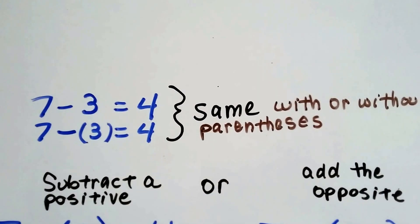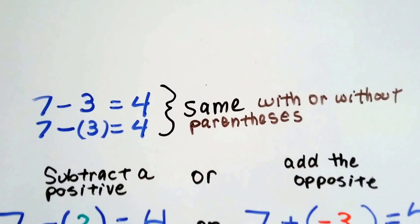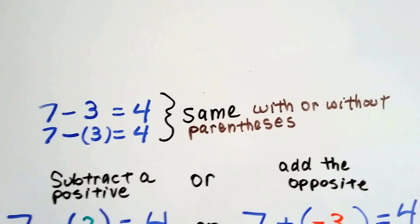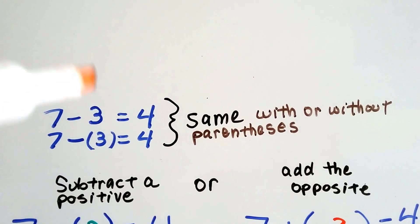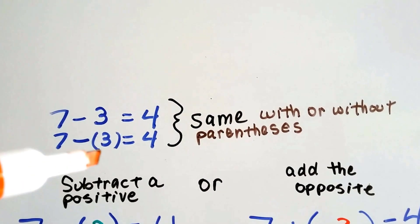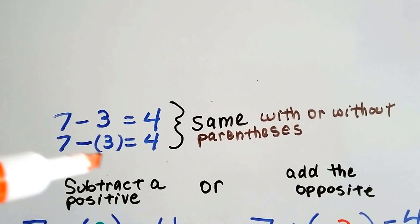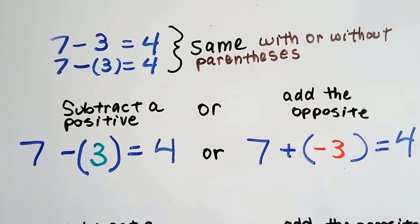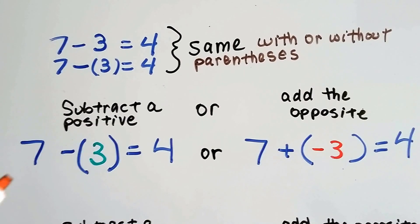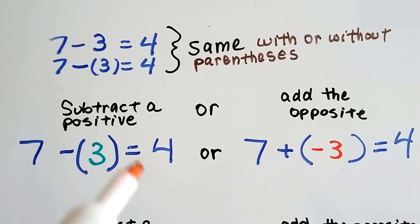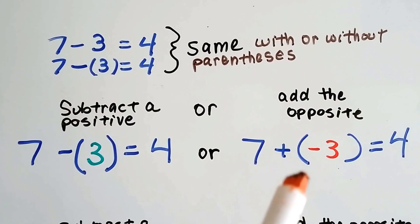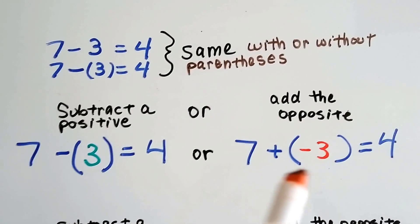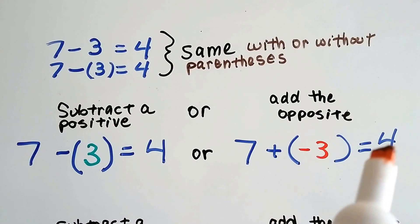7 take away 3 equals 4, and 7 take away 3 equals 4 with the 3 in parentheses — it's the same thing with or without the parentheses. We're just putting this 3 inside parentheses to show it's a positive 3. So we can subtract a positive, like 7 take away this positive 3 and get 4. Or we could add the opposite: the opposite of a positive 3 is a negative 3, so we add a negative 3 and still get 4.